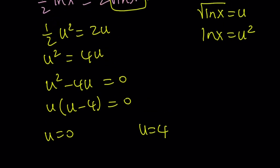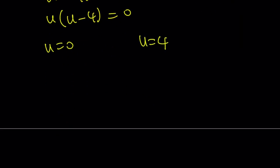But you can remember what u is, right? u is square root of ln x. So let's go ahead and back substitute. If square root of ln x is 0, that means ln x is equal to 0, which means x is equal to 1.